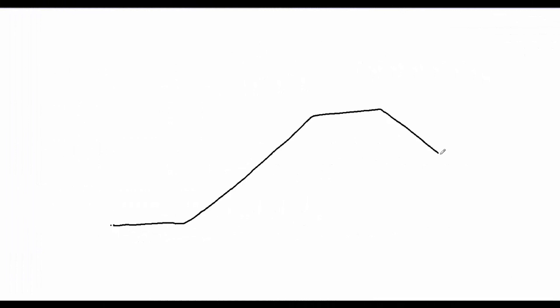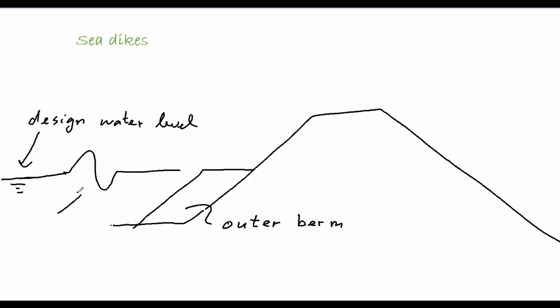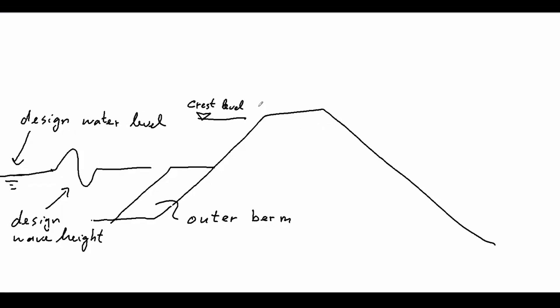I think I should start with a new drawing now. I have drawn the outer berm, as you can see here. And it is applicable to sea dikes mainly, because along the coast we have a lot of waves. It can be really high waves. And the overtopping height can be up to five meters. So, it could double the height of the crest of a sea dike. But along rivers we don't have that high waves. It can be up to half a meter. So, we don't need an outer berm along rivers.